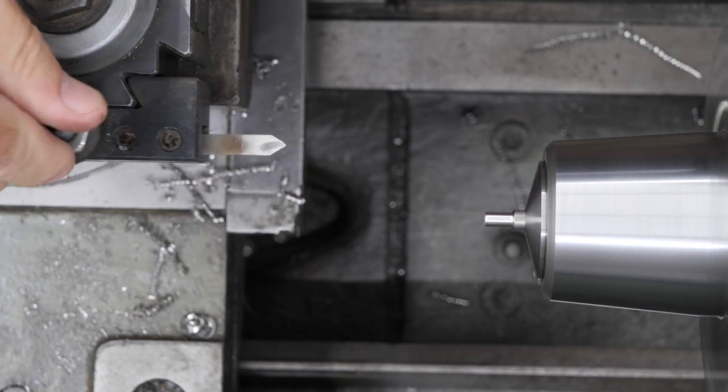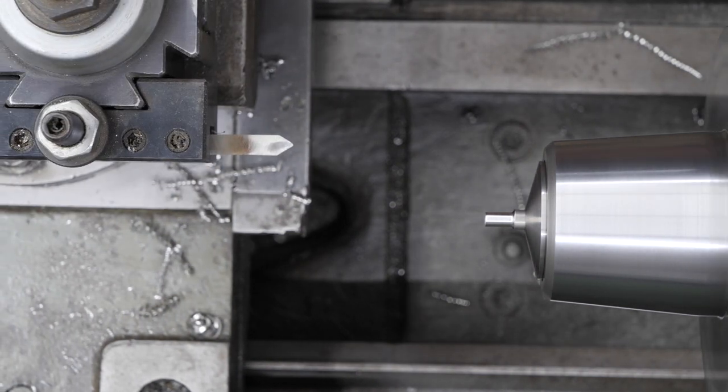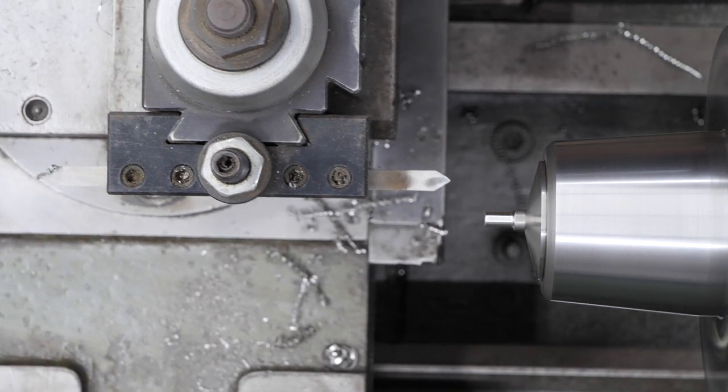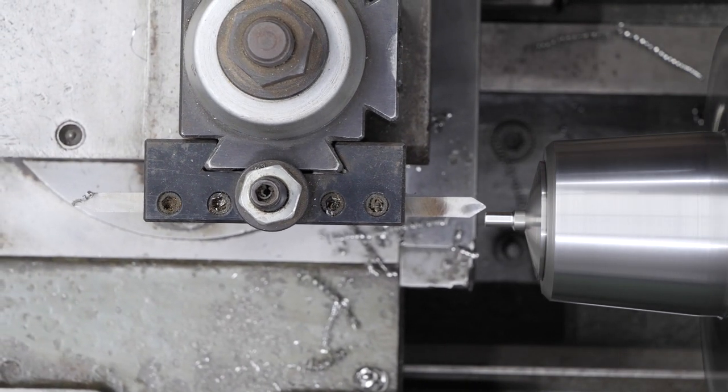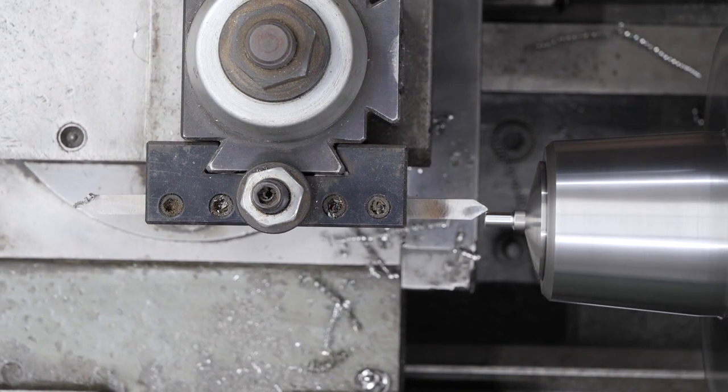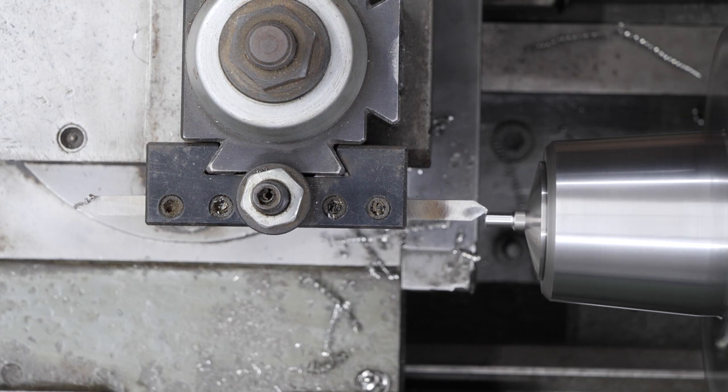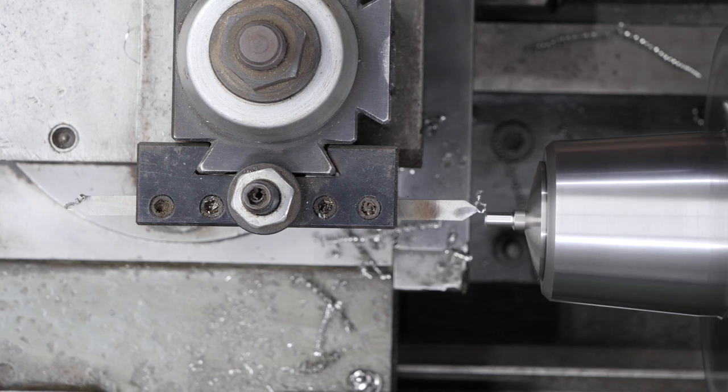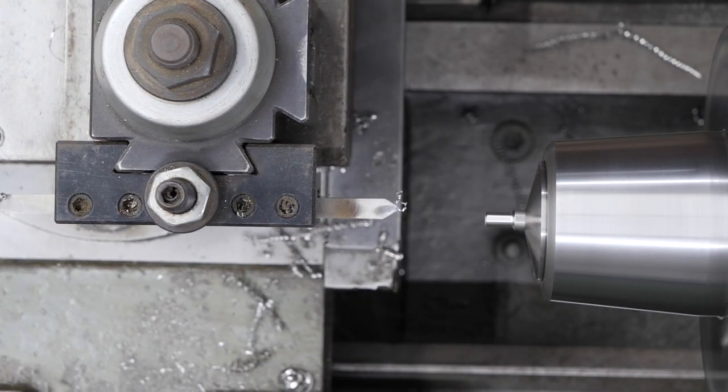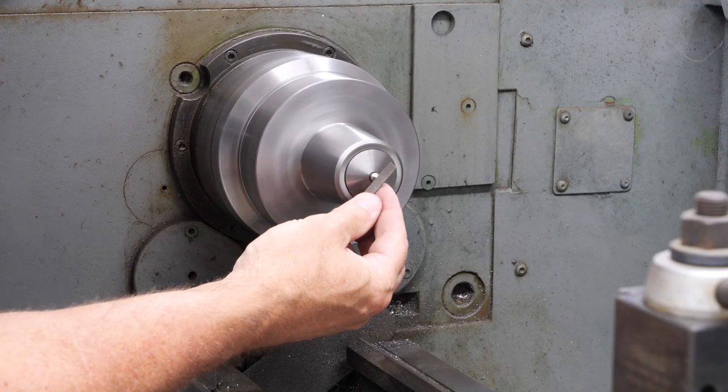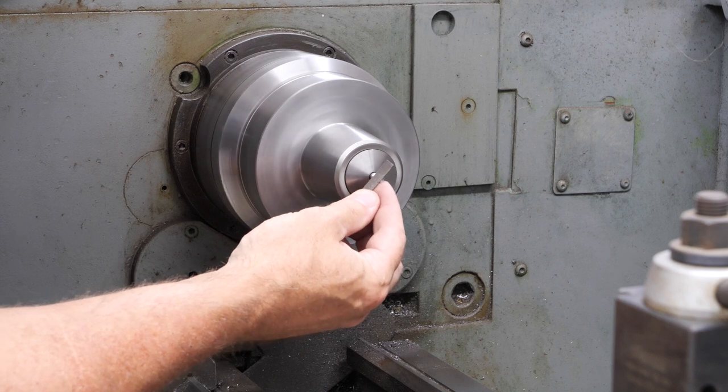Alright, I've got the outside diameter. I'm going to switch the tool around and just take a quick little bevel cut on the edge. I'll just go ahead and clean up that edge with a small jeweler's file and some sandpaper.